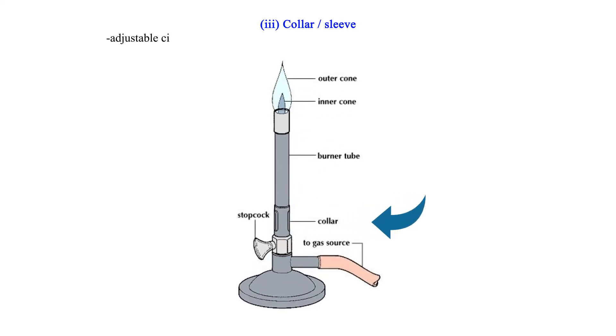3. Collar or sleeve: Adjustable circular metal attached to the main chimney or barrel with a side hole or entry. It controls the amount of air entering and used during burning.